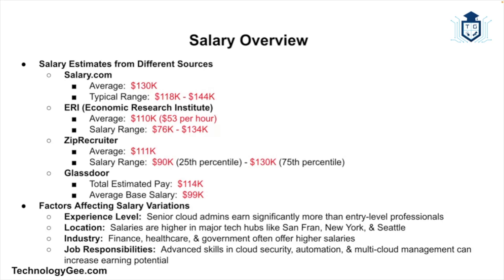The average annual salary for a cloud administrator in the U.S. varies according to different sources. Salary.com reports an average annual salary of $130,000 per year with a typical range between $118,000 and $144,000. The Economic Research Institute indicates an average of about $110,000 per year with a range of about $76,000 to $134,000. ZipRecruiter lists an average of $111,000 with most salaries ranging from $90,000 to $130,000. Glassdoor estimates total pay at about $114,000 per year with an average base salary of $99,000. These variations are attributed to factors such as experience, location, industry, and specific responsibilities.